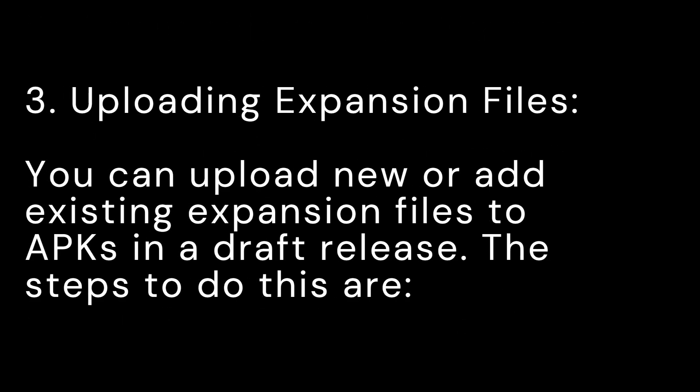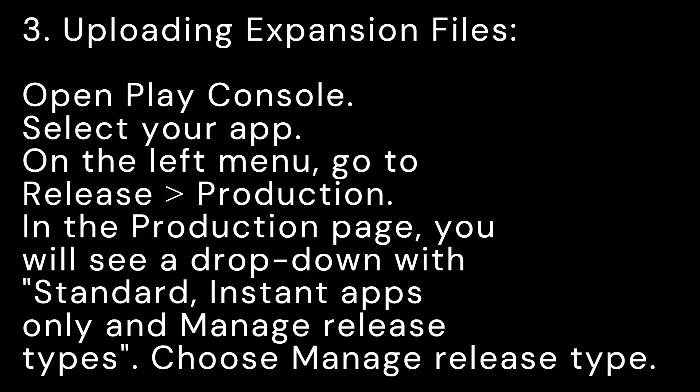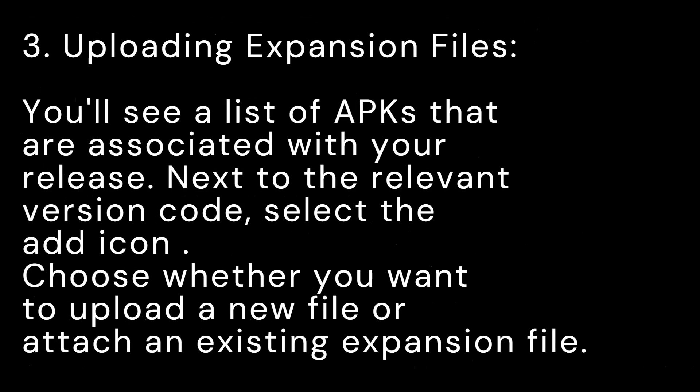3. Uploading Expansion Files. You can upload new or add existing expansion files to APKs in a draft release. The steps to do this are: Open Play Console, select your app. On the left menu, go to Release > Production. In the Production page, you will see a drop-down with Standard, Instant Apps Only, and Manage Release Types. Choose Manage Release Type. You'll see a list of APKs associated with your release. Next to the relevant version code, select the Add icon.